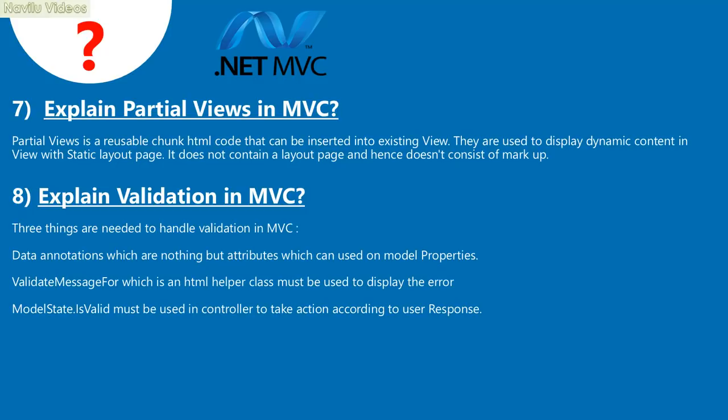Question 8: Explain validation in MVC. Three things are needed to handle validation in MVC: data annotations, which are attributes that can be used on model properties; validate message, for which an HTML helper class must be used to display the error; and ModelState.IsValid, which must be used in the controller to take action according to user response.